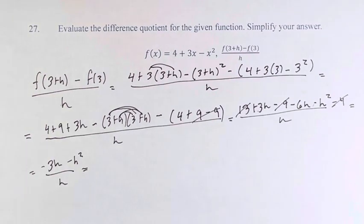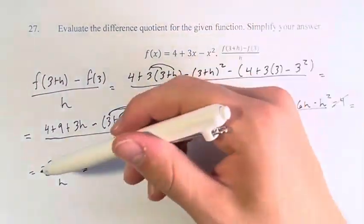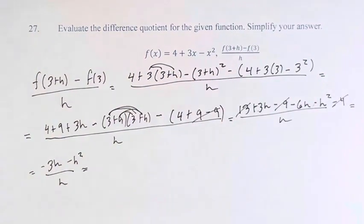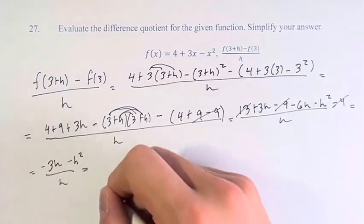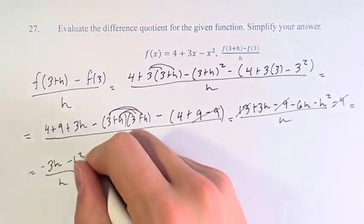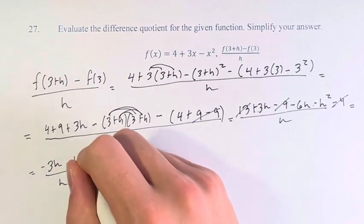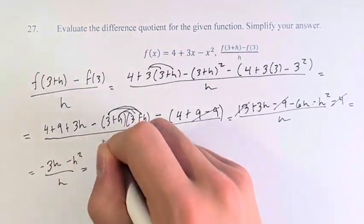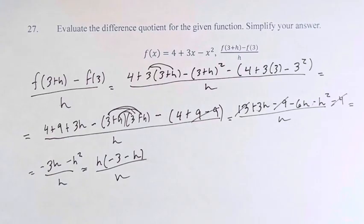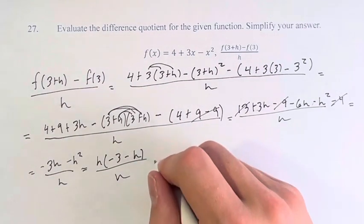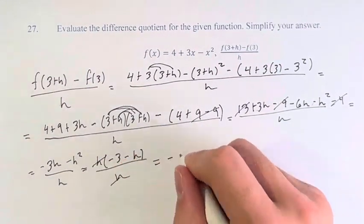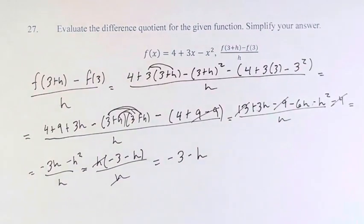Next, we have to divide by h. So we can pull out an h from up here, which leaves us with -3 - h, right? One h comes out, one h stays for h², which leaves us with just that. The h divides out, -3 - h.